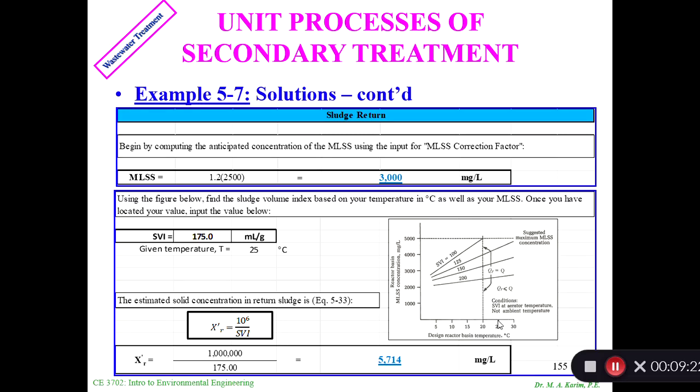Now MLSS will calculate. MLSS is 1.2 times MLVSS = 3000. Now we have to calculate the SVI since we have temperature of 25°C and MLSS is 3000. At 3025, I come up with somewhere around here, so I took it as 175 mL/g. Estimated solid concentration at return: Xr = 10^6 / SVI. I got 5714, which is a little bit more than 5000. It could be different.